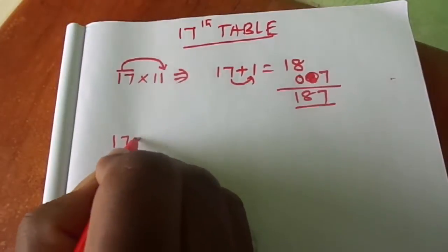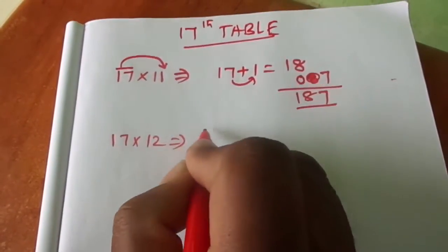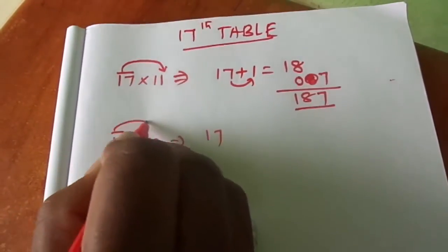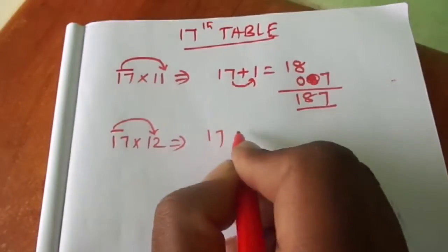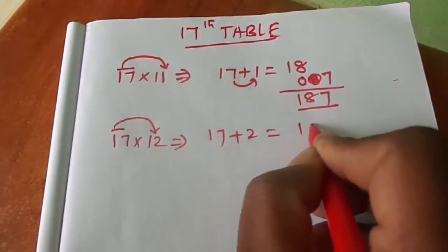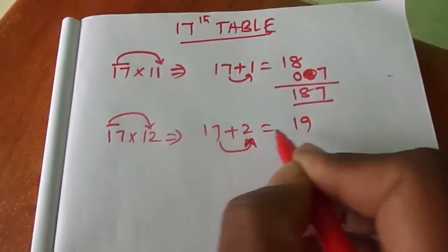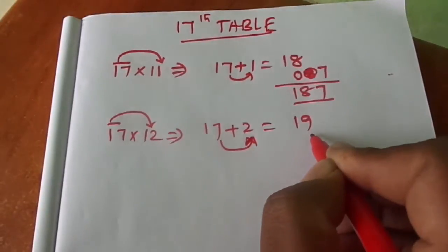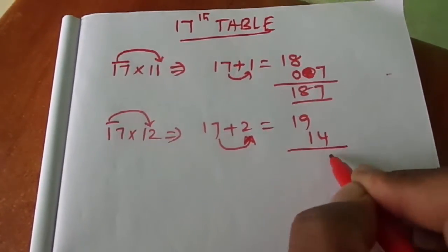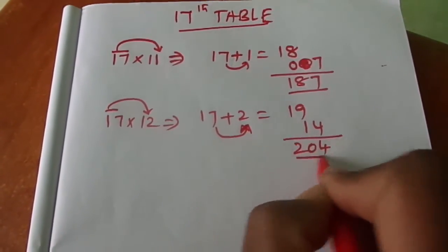17 12s: 17 plus 2 is 19. 7 twos are 14. That is equal to 204.